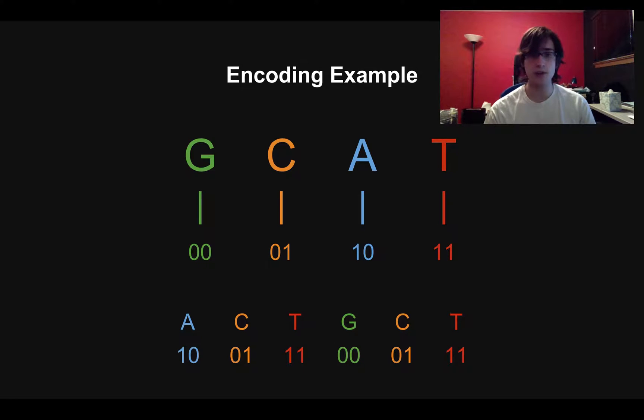There's no actual compression going on yet. This is just a way to encode DNA without any compression. And it's really easy to decode because if I see a string of bits and I want to turn it back into DNA, I just look at the pairs of bits and can figure out which letter each one corresponds to.